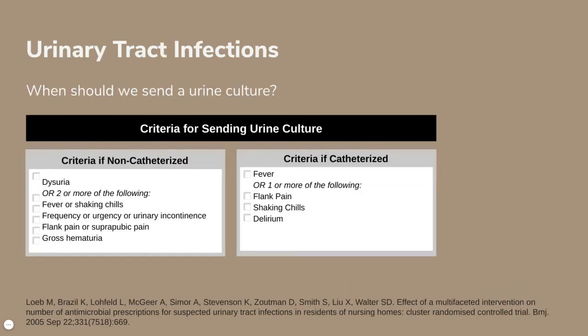When should we be sending a urine culture and initiating antibiotics? The Loeb criteria are generally accepted indications to initiate antibiotics and send a urine culture. If the resident or patient is not catheterized, we're looking for symptoms such as dysuria, or two or more of the following: fever or shaking chills, frequency, urgency, or urinary incontinence, flank pain or suprapubic pain, and gross hematuria. Notice that delirium is not noted as a symptom to watch for in non-catheterized patients because it is very nonspecific.